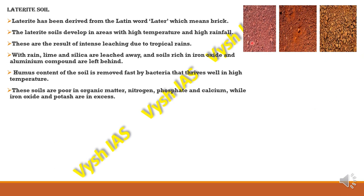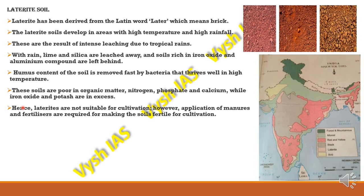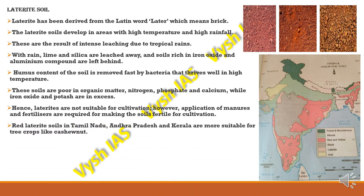Laterite soils are not suitable for cultivation, but with applications of certain manures and fertilizers, they can be made suitable for growing crops. Red laterite soil is found in Tamil Nadu, Andhra Pradesh, and Kerala, and is more suitable for crops like cashew nut. These soils are widely cut as bricks and used for house construction. They have mainly developed in the higher areas of the peninsular plateau and are commonly found in Madhya Pradesh, hilly areas of Odisha, Assam, Karnataka, Kerala, and Tamil Nadu.